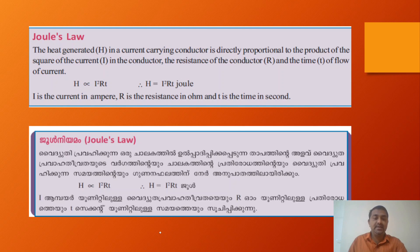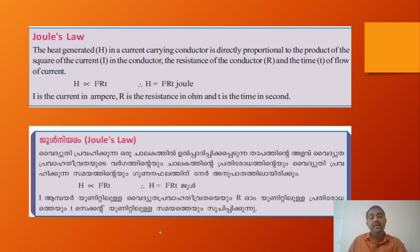H is proportional to I²RT. Here, H is the heat energy in Joules, I is the current, R is the resistance, and T is the time of flow of current. Current is the prime factor — it is proportional to heat energy in the square. The heat energy is used in the resistance system.